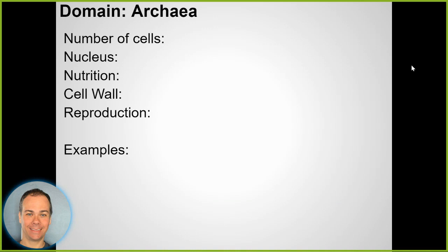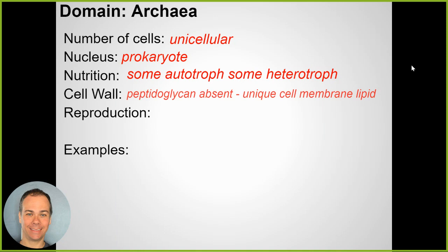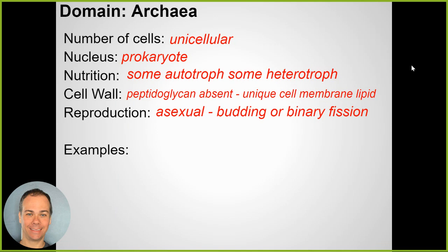Another big group: archaea. These are the weird things we're probably not at all familiar with. They're all around but were only discovered relatively recently. They're also unicellular prokaryotes without a nucleus. Some are autotrophs, some are heterotrophs. You might ask why we don't just call them bacteria - they have similar characteristics, but when scientists looked more closely with molecular evidence, they found archaea are actually not that closely related to bacteria. They have a cell wall but made of different material.